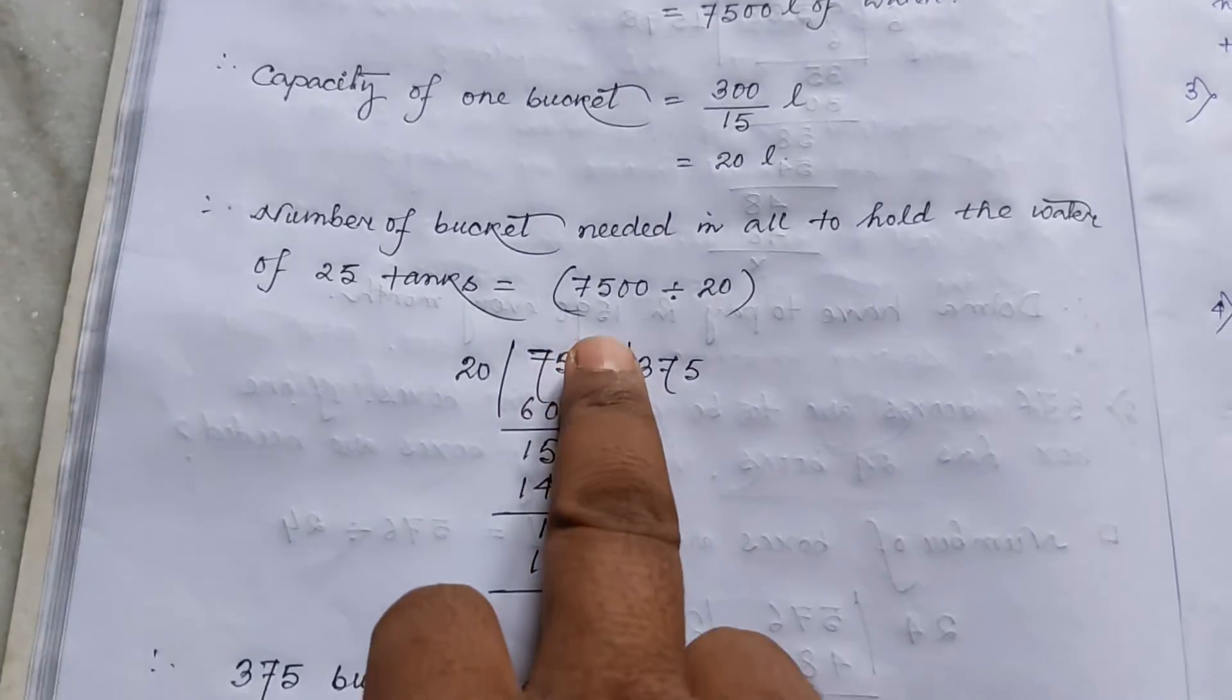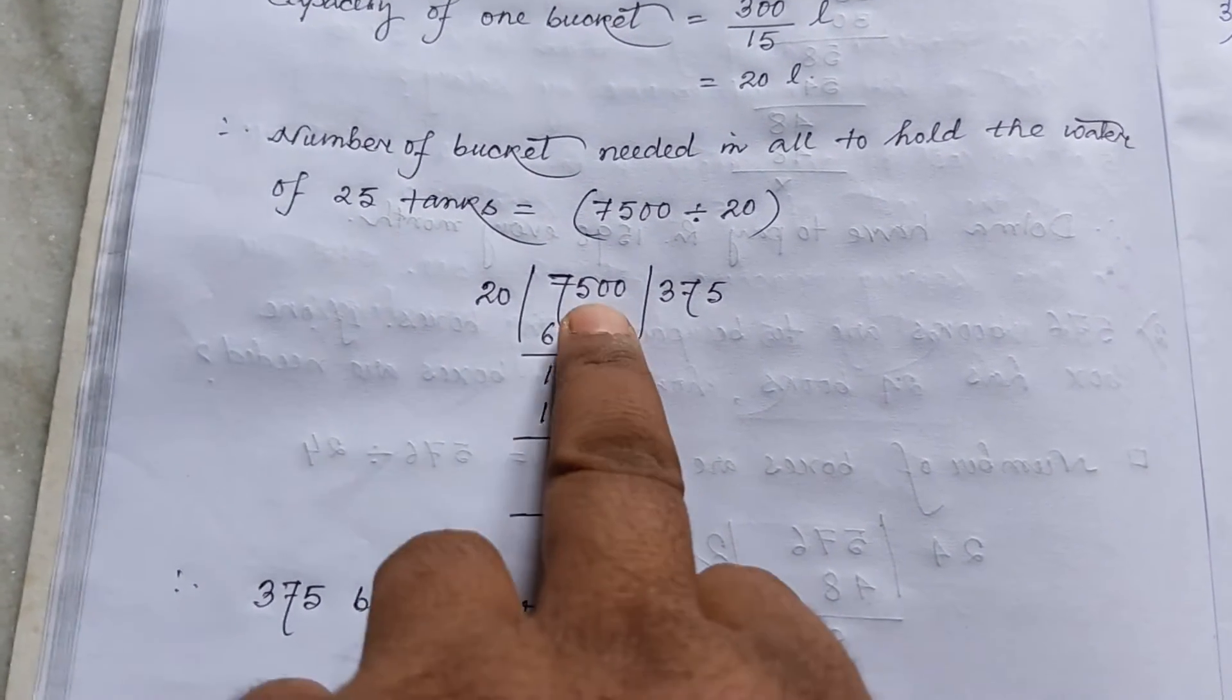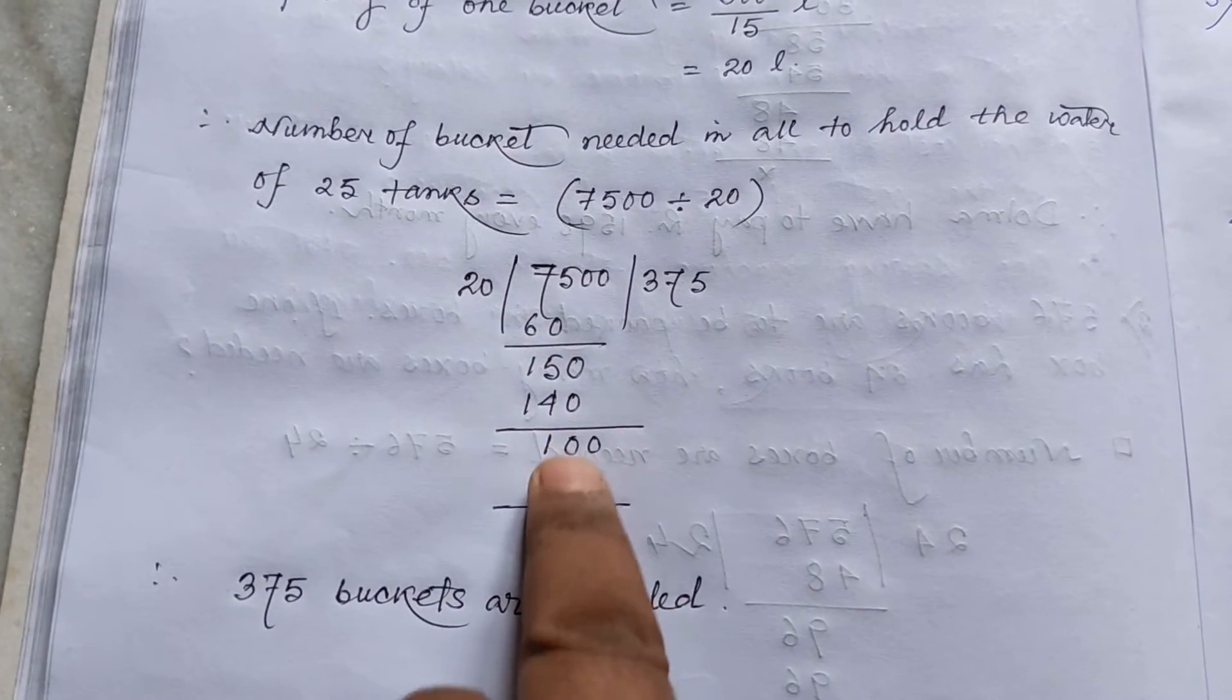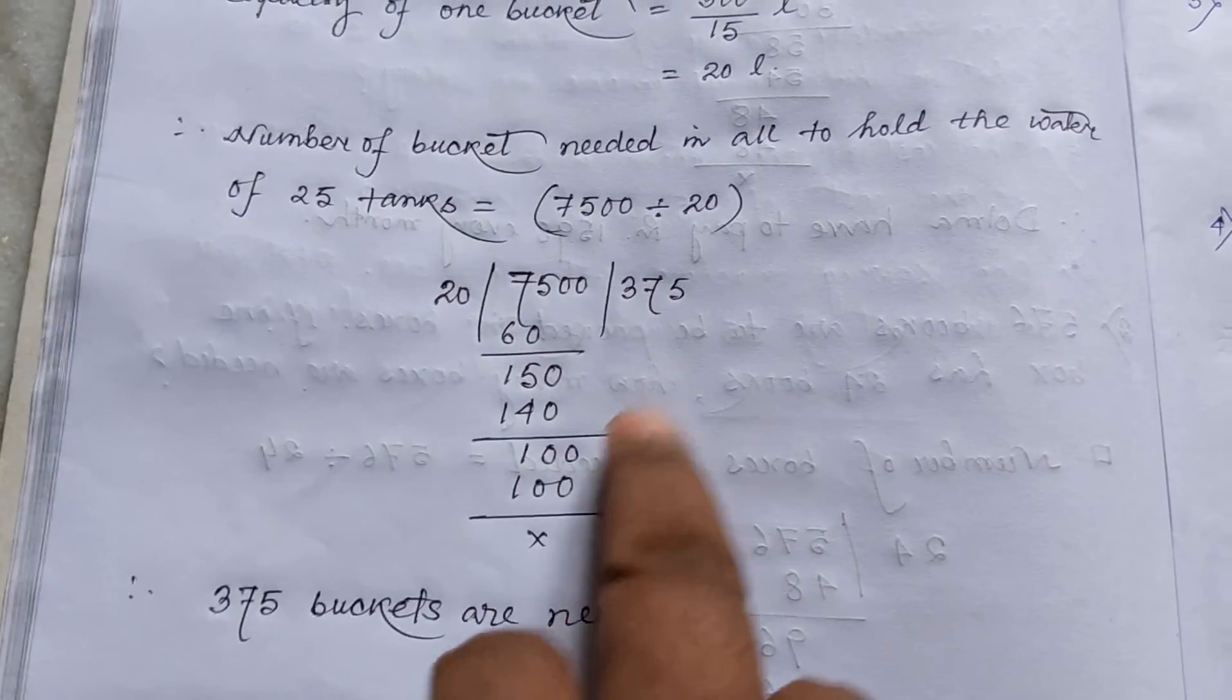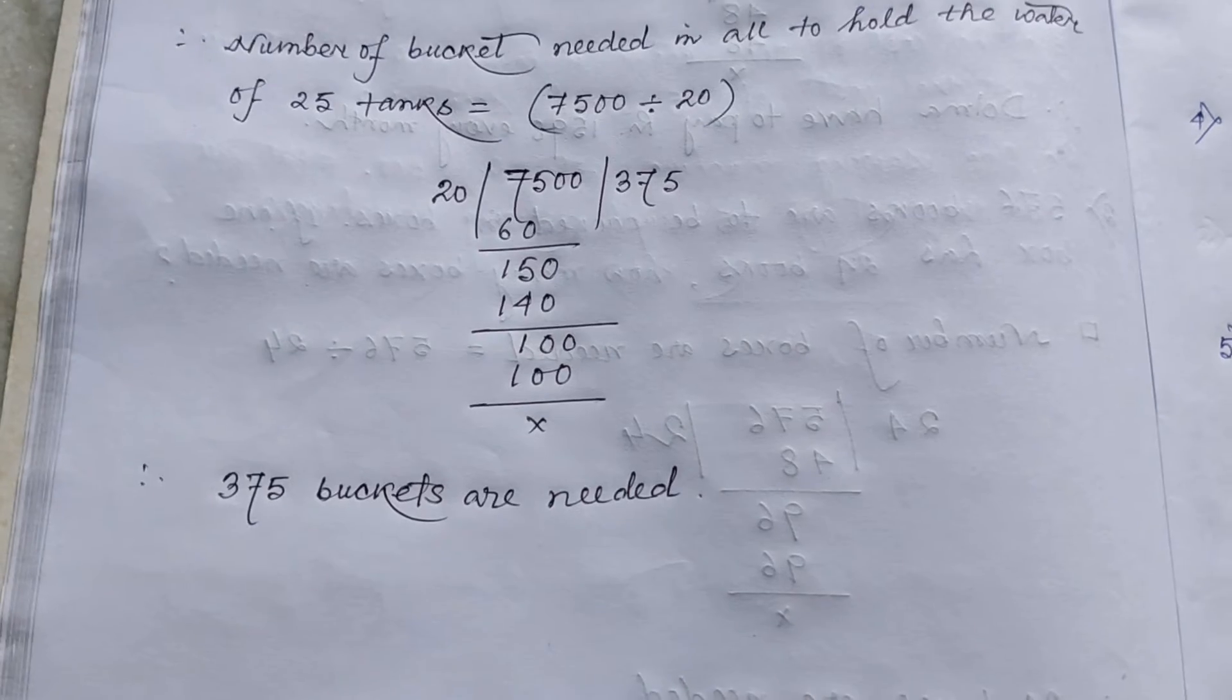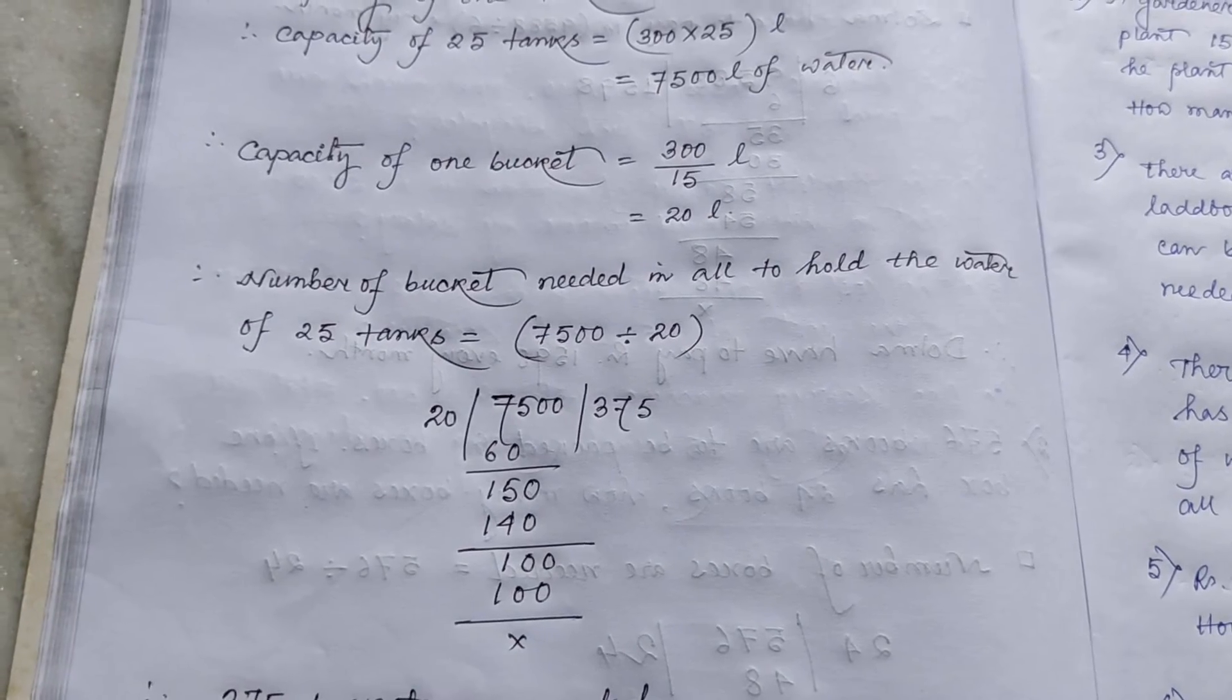So 7500 divided by 20. So first of all 3 20 is a 60. 15 is remainder. Then 1 0 comes 150. 7 20 is a 140. Then 10 remainder. Again this 0 comes total 100. 5 20 is a 100. So ultimately 375 buckets are needed. So in this way you can solve this type of word problems.